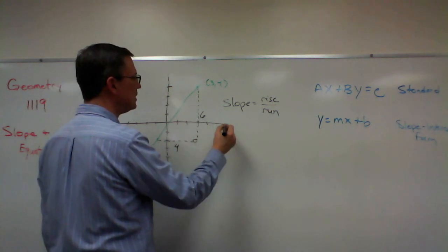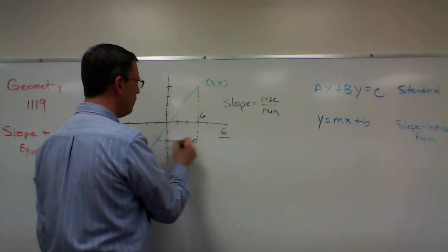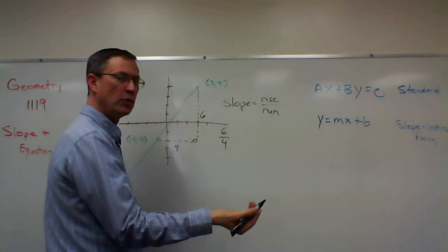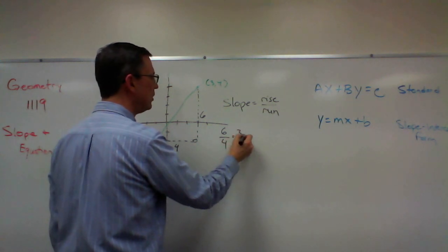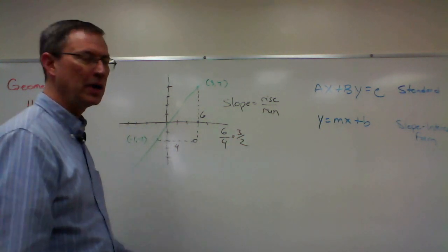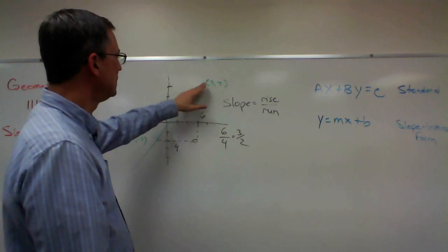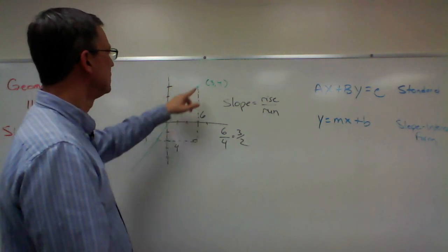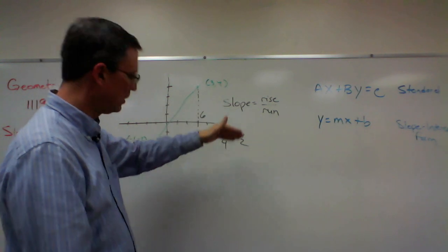So we would say that the slope, and any textbook that you look at will express it this way, the rise over the run. So the rise is the up and down part, and the run is going this direction. So in this case, the slope would be six over four, which when you reduce that would be three over two.